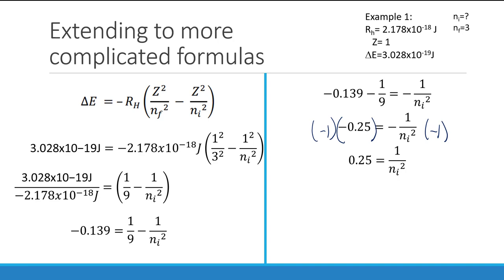We can multiply our ni squared up, we can divide our 0.25 over, and we can see that our ni, by taking our square root, would be 2.